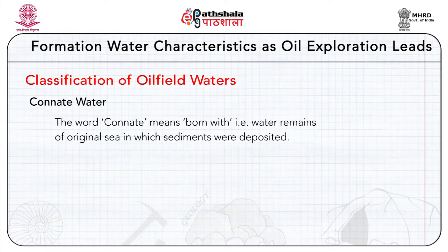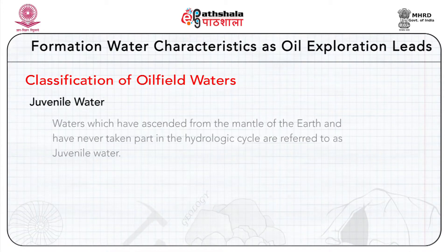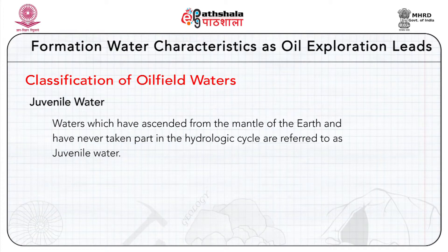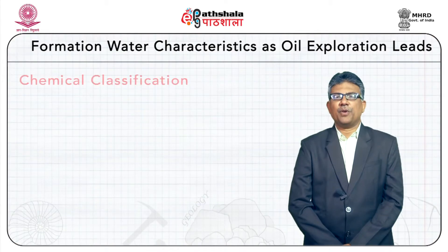Juvenile waters are waters that have ascended from the mantle to the earth and have never taken part in the hydrologic cycle. However, juvenile waters are hard to identify, as most waters escaping from volcanoes are groundwaters vaporized by hot lava. Water from hot springs and geysers are not juvenile waters but meteoric waters which, on percolation through fractures, got heated to high temperatures at depth. These are also sometimes referred to as juvenile water.